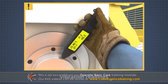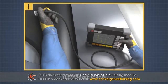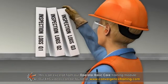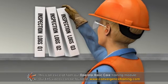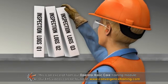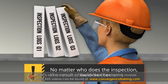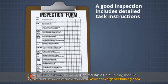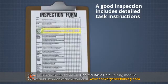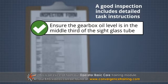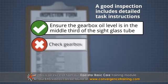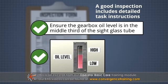Vibration readings and ultrasonic levels. Operator basic care inspections should be measurable and repeatable, not subjective. No matter who does the inspection, the results should be the same. A good inspection includes detailed task instructions, such as: 'Ensure the gearbox oil level is in the middle third of the sight glass tube,' versus simply 'check gearbox.' Including pictures of the gauge on the inspection form and visual controls on the gauge itself will ensure the inspection is objective.